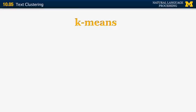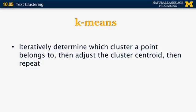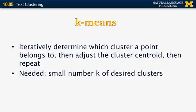One of the simplest techniques for document clustering is the so-called k-means method. It works by iteratively determining which cluster a point belongs to and then adjusting the cluster centroid for that cluster, then repeating. What is required, however, is to know the number of clusters in advance, k. K-means is based on hard decisions — once a document is assigned to a certain cluster, it cannot change clusters and cannot be assigned to another cluster simultaneously.